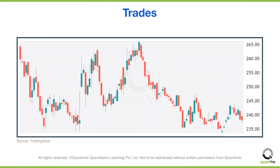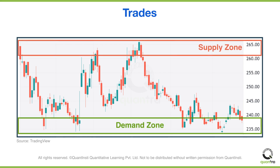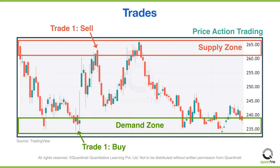So how do you take trades based on supply and demand zones? Once the supply and demand zones are identified, you can buy at the demand zone, since you can expect the price to reverse and start increasing, and sell at the supply zone, since you can expect the price to reverse and start decreasing. This is the fundamental principle behind price action trading using supply and demand zones.